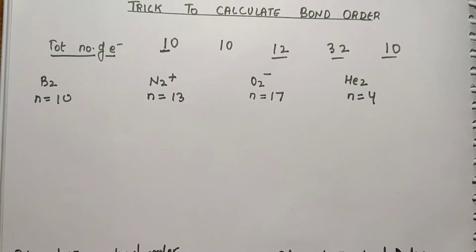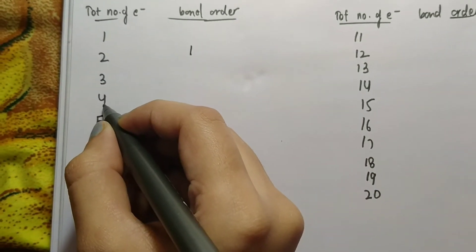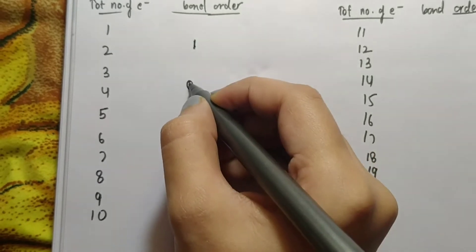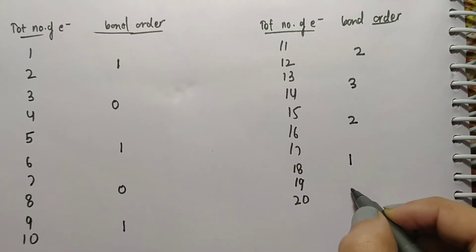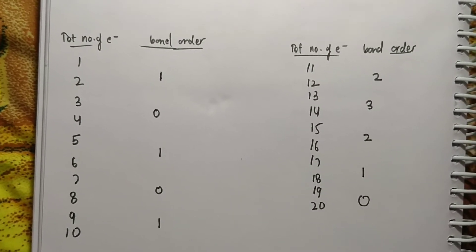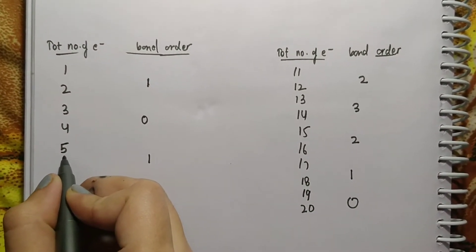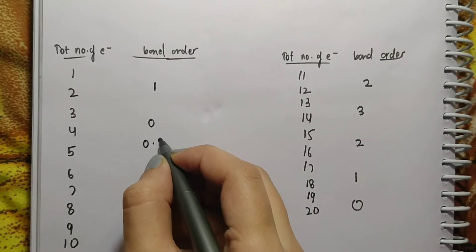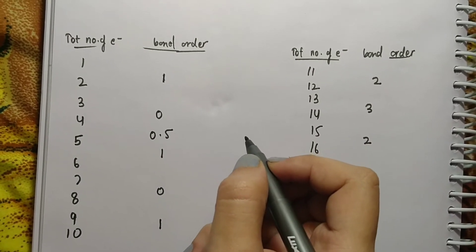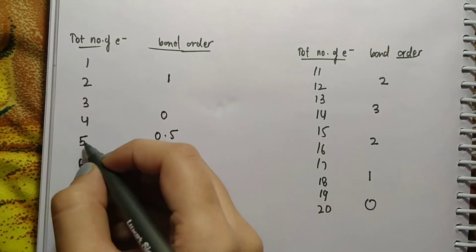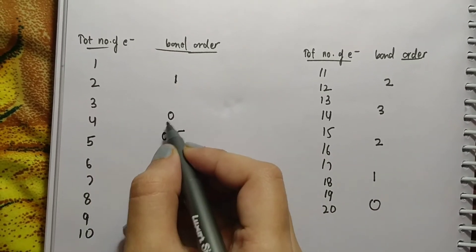So continuing the pattern: 2 electrons have bond order 1, 4 electrons have bond order 0, making the sequence 'duas duas bara batis duas'. Now the question comes: how do we calculate the bond order of a species which contains an odd number of electrons? For example, if we take a species which has 5 electrons, the bond order will be 0.5. For odd electron species, we subtract 0.5 from the species which has the higher bond order. 5 comes between 4 and 6 — bond order of 4 is 0 and bond order of 6 is 1, so we subtract 0.5 from 1.